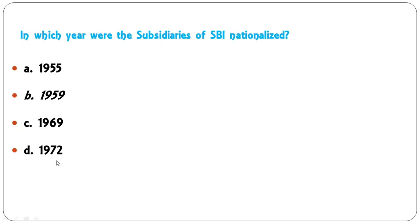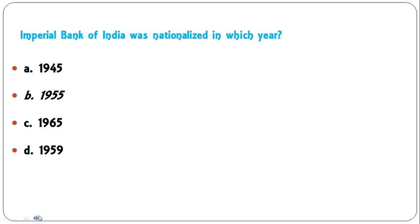In which year were the subsidiaries of SBI nationalized — 1955, 1959, 1969, or 1972? There were seven subsidiary banks and they were nationalized in 1959, whereas SBI itself was nationalized in 1955. The correct answer is 1959.